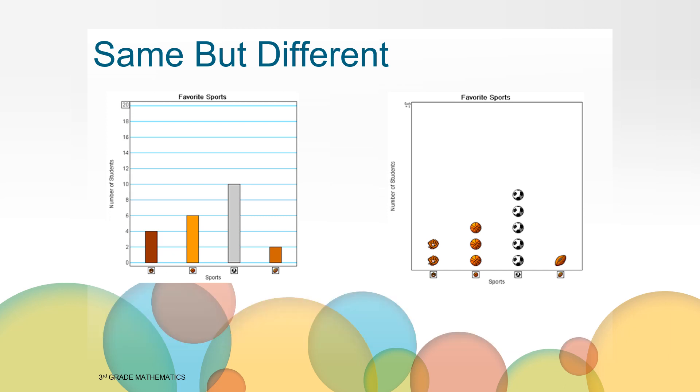Let's come back together and talk about what you might have discovered. You may have started by reading the labels on both of the graphs. The titles are the same: Favorite sports. The categories or groups at the bottom are the same. Both have groups labeled with different sports, as you can see in the pictures and by reading the label sports. They both also count the number of students as labeled on the left side of the graph here. You may have even noticed that the data shown in the height of the bars is similar to the height of the pictures in the pictograph.